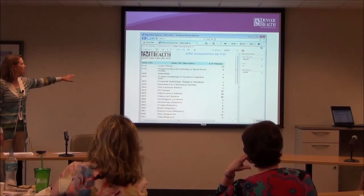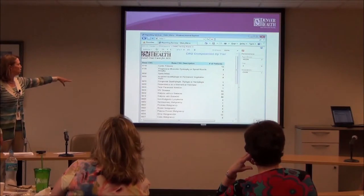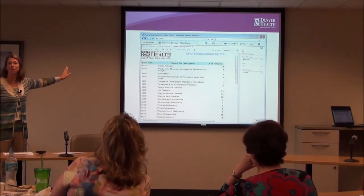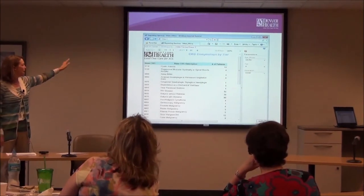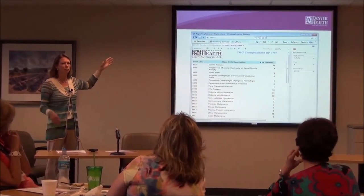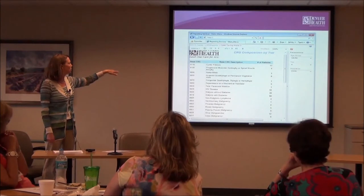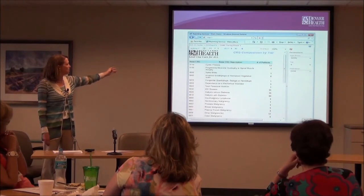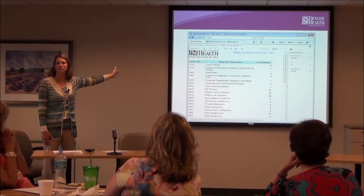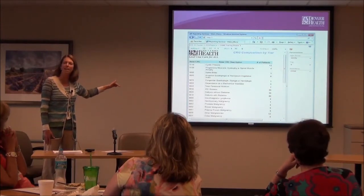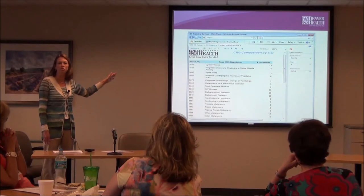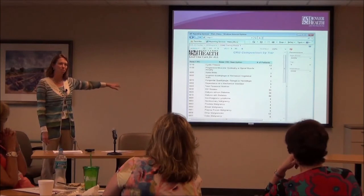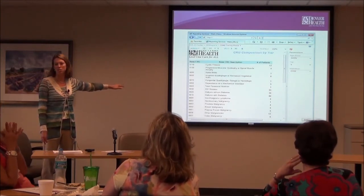Mechanically, we drilled down into CRG details. CRG status 9 is the catastrophic category, and if you drill down, you find individual diagnostic groups — cystic fibrosis, spina bifida, HIV disease — that build into that category. We decided we didn't necessarily want to put all of status 9 into a single tier. Some of these categories might not be actionable — they might be expensive, but there wasn't much we could do with a care coordination strategy.